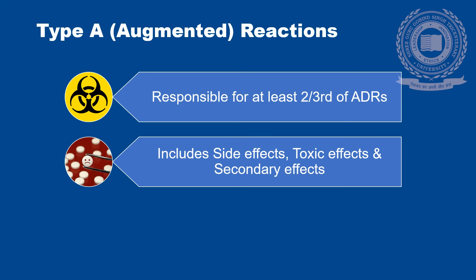Type A ADRs include side effects, toxic effects, and secondary effects. Toxic effects are the result of excessive pharmacological action of the drug due to overdosage or prolonged use — for example, morphine causes respiratory failure in overdosage, and streptomycin causes vestibular damage on prolonged use. Secondary effects are indirect consequences of a primary action of the drug — for example, suppression of bacterial flora by tetracyclines paves the way for super infections, and corticosteroids weaken host defense mechanisms so that latent tuberculosis gets activated.